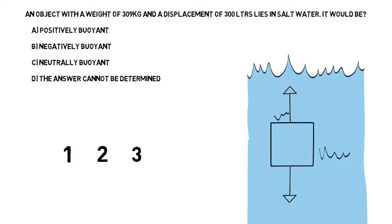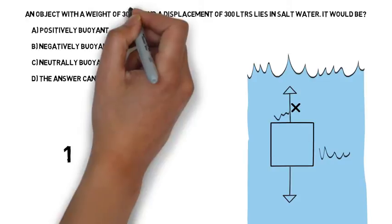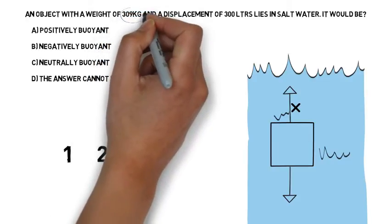Draw a square, draw a downward arrow, draw an upward arrow. And don't forget to put a multiplication sign next to that upward arrow. If you learn this diagram and always use it, you'll find these buoyancy questions much easier.